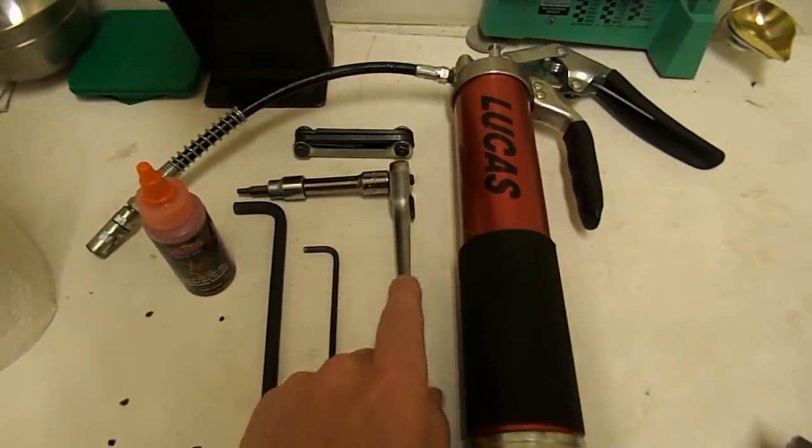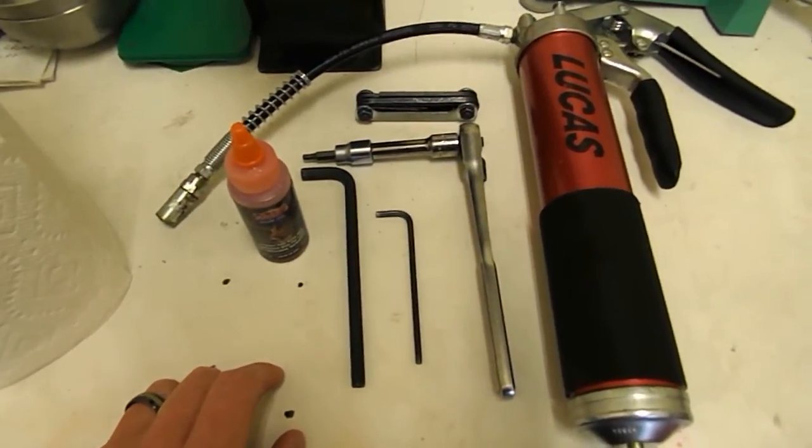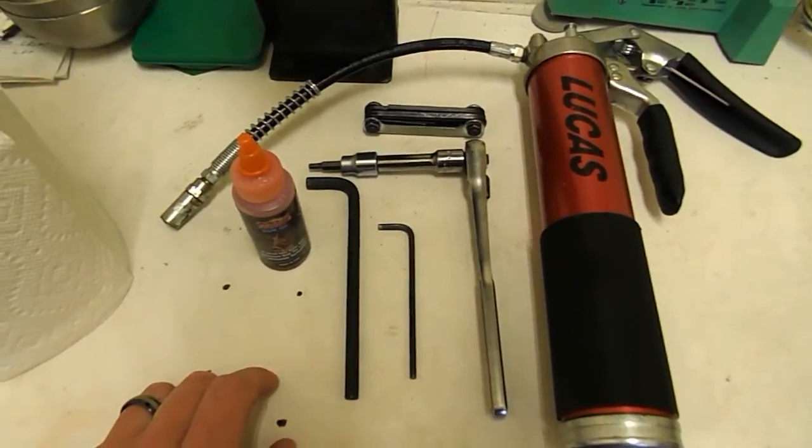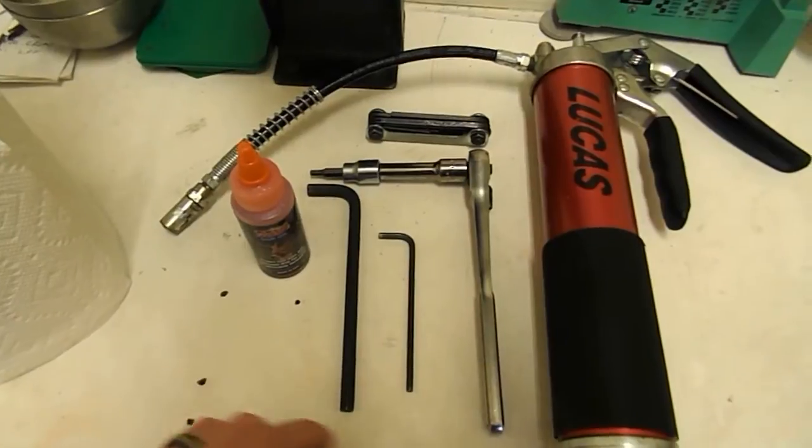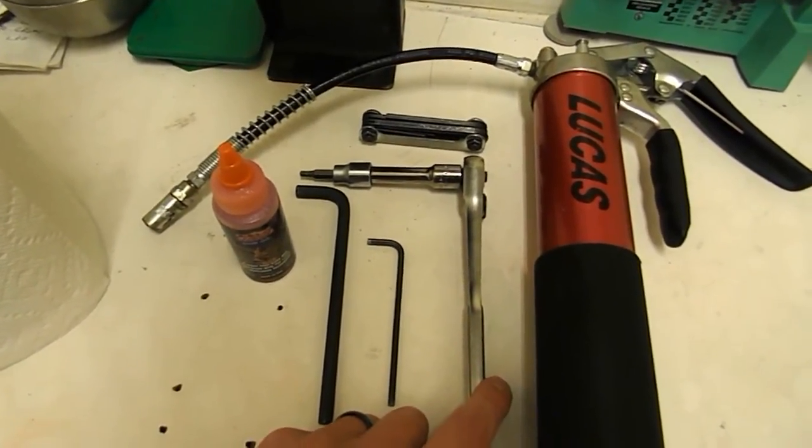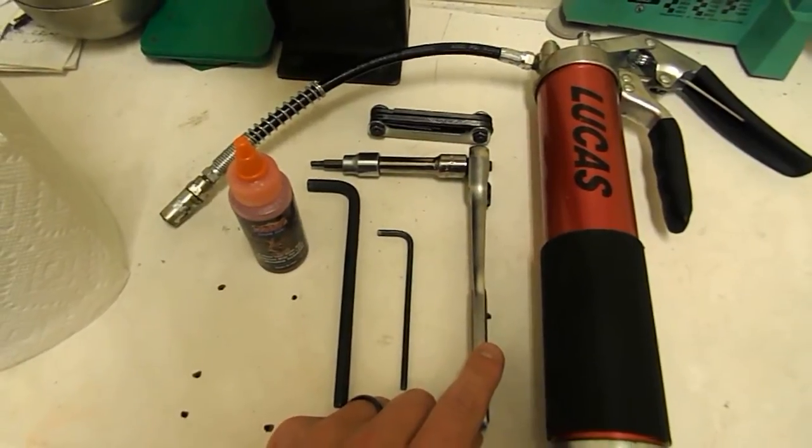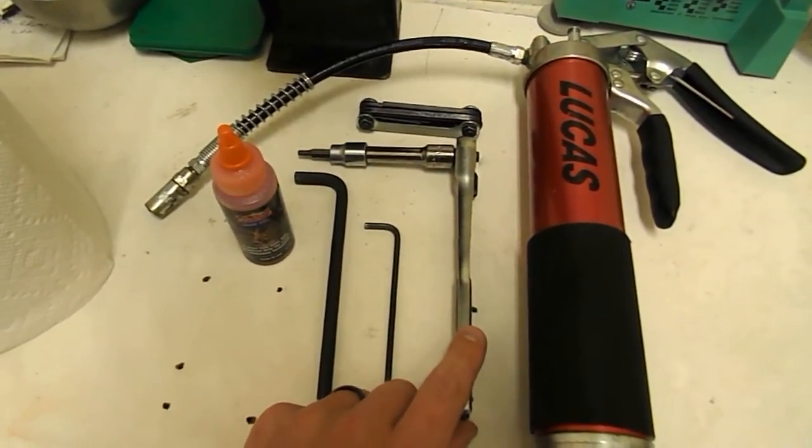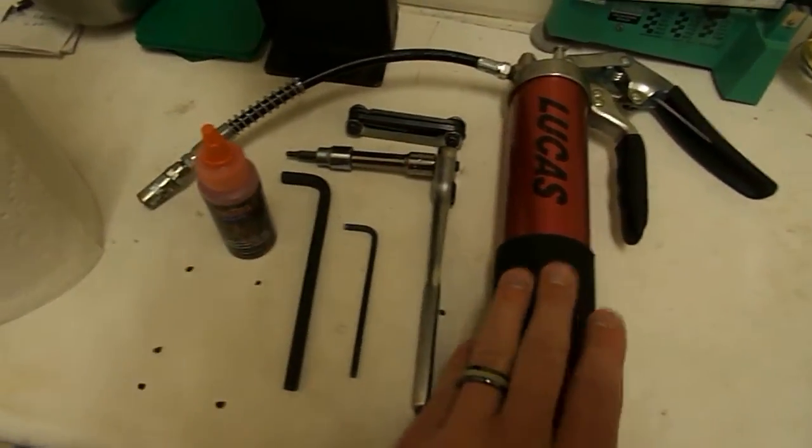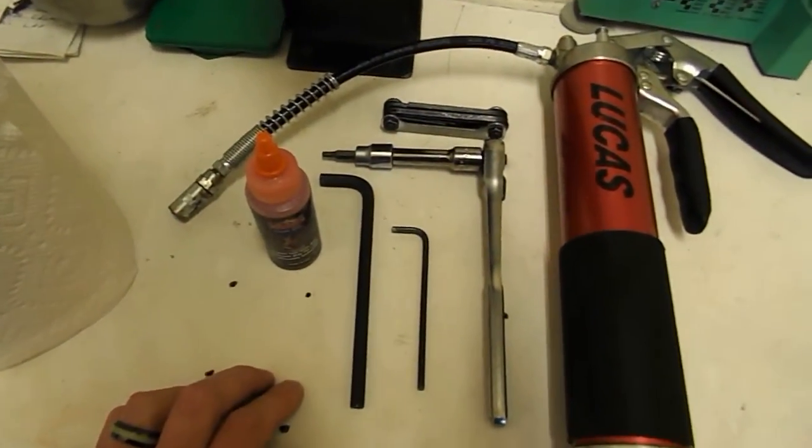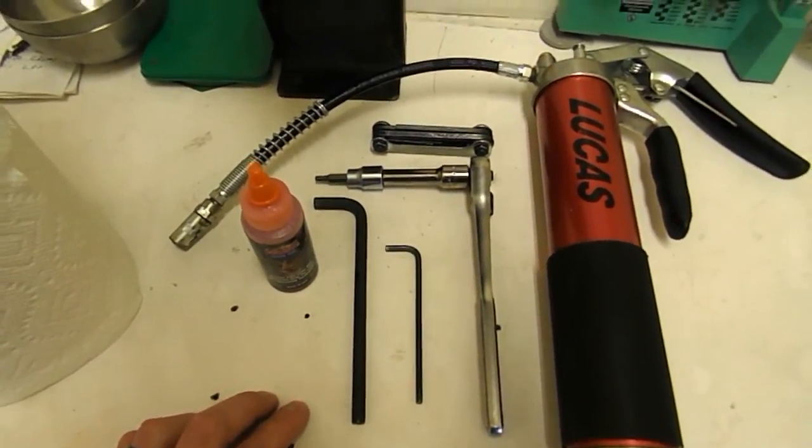I've got a 3/8ths ratchet with a 5/32nds Allen to take care of some of the tougher screws. The two on the main ram that hold the sub plate to the ram are pretty tight, extremely tight. You need to have them that way so the thing doesn't come out of adjustment while you're loading. I've got a grease gun here—any grease gun will work, standard. I use high pressure grease.